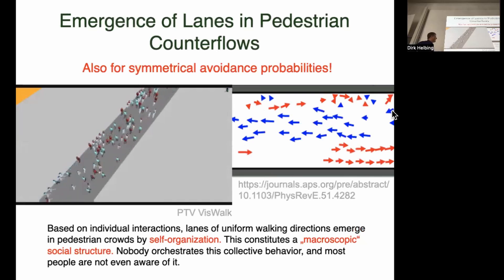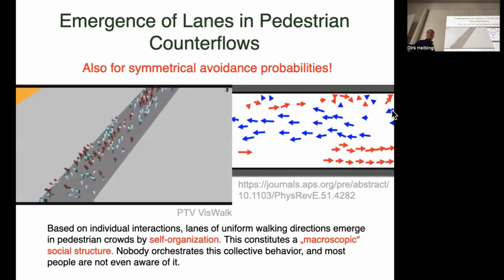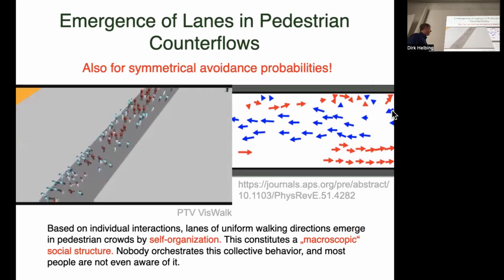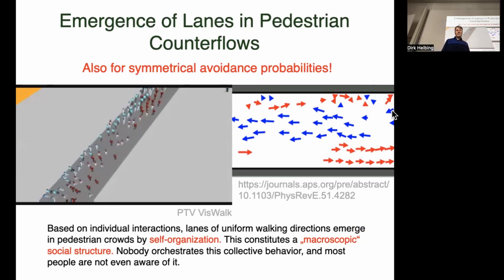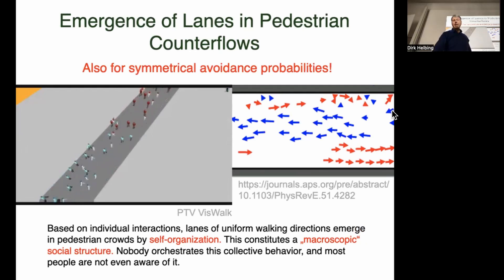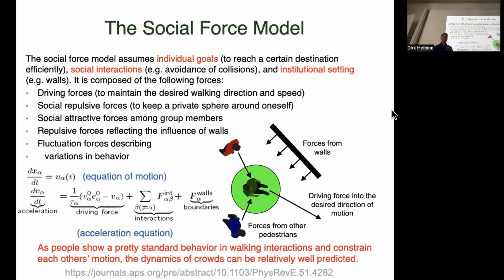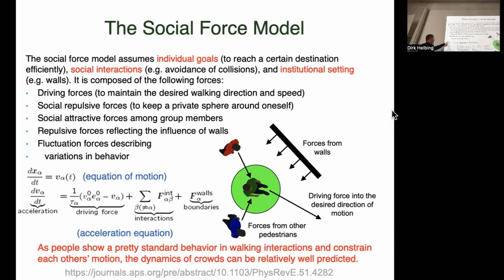Here is a computer simulation of the model. It starts pretty messy but eventually you can see lanes forming, and the number of lanes goes down over time. Now we have about three lanes and after some time you probably see two lanes. We assume that people who leave on one side are entering again on the other side, so in principle it's a circular setting. All of that can be well understood based on a pretty simple model inspired by physics called the social force model.